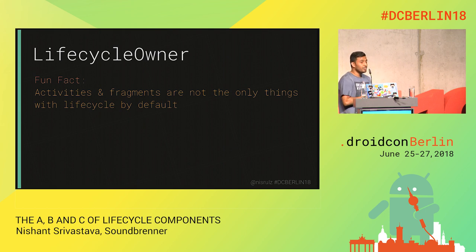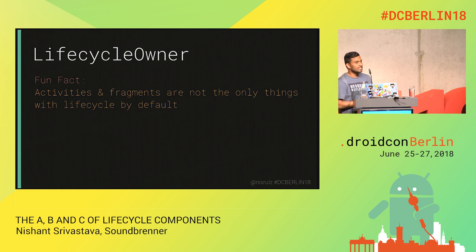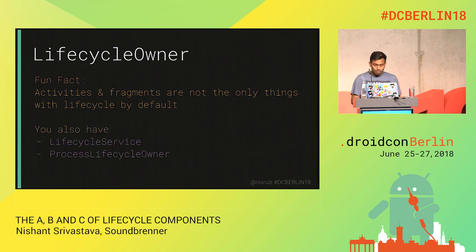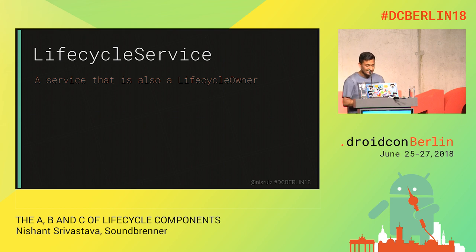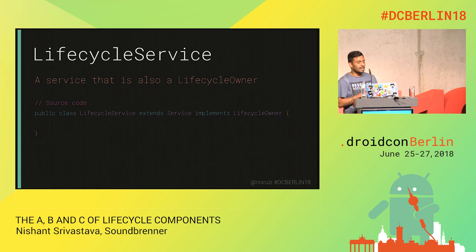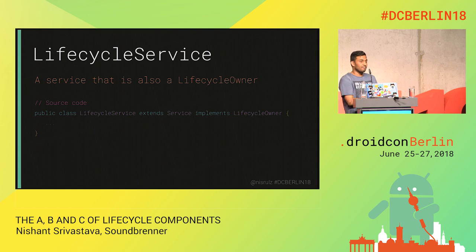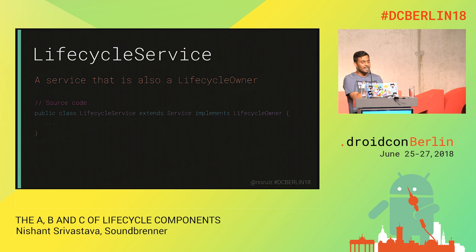Fragments and activities have lifecycles, but there are other classes that have also been implemented with lifecycles. Those are LifecycleService and ProcessLifecycleOwner. LifecycleService is a service that is also a LifecycleOwner. Its source code has all the expected methods — onCreate, onStart, onResume, onDestroy, onStop — and because it implements LifecycleOwner, it returns the lifecycle variable so you can add observers on the lifecycle states of this service. This makes the whole process of extracting lifecycle-related logic away from the service into your own classes.